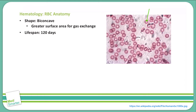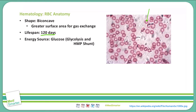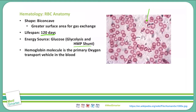The lifespan of a red blood cell is approximately 120 days. This can be greater or less depending upon other potential pathologies. Red blood cells get their energy from glucose, specifically from glycolysis as well as the HMP shunt. The hemoglobin molecule is the primary oxygen transport vehicle in the blood — we'll talk about that in just a few minutes.